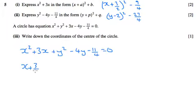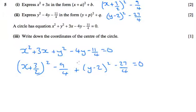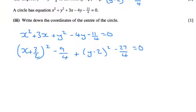So x plus 3 over 2 squared take 9 over 4 plus y take 2 all squared take 27 over 4 equals 0. They must be the same because each bit was the same from part 1.